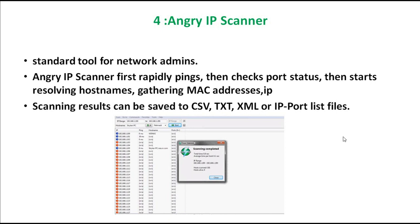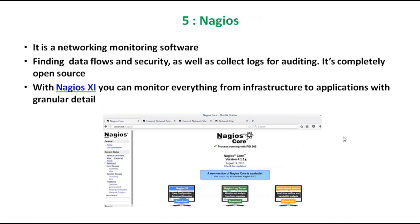The next one is called Nagios. It is a network monitoring software also used for monitoring. It finds data flows and handles security as well, collecting logs. It is completely open source, meaning it is free. It has another version called Nagios XI, which can monitor everything from infrastructure to application with granular detail. If something is wrong or someone is attempting to attack your network, it gives you a log notification.